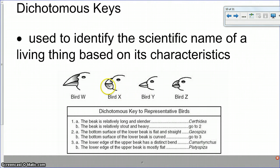If I was doing bird X, the beak is relatively stout and heavy. Go to two. The bottom surface of the lower beak is flat and straight. No. The bottom surface of the lower beak is curved. So I'd go to three. The lower edge of the upper beak has a distinct bend. The lower edge of the upper beak is mostly flat. So the lower edge of the top beak is this part here. It's pretty flat. This is the one that's bent. So bird X must be this one right here. And bird Z is the one with the bend. Sorry, the one with the bend is this one. And the one that's flat is the platyspiza.